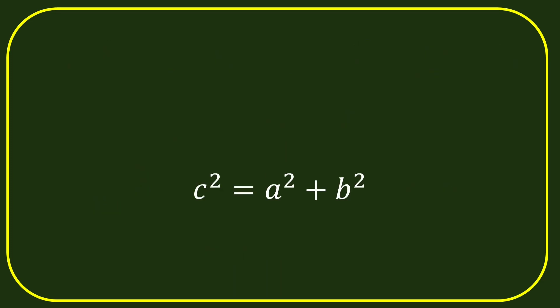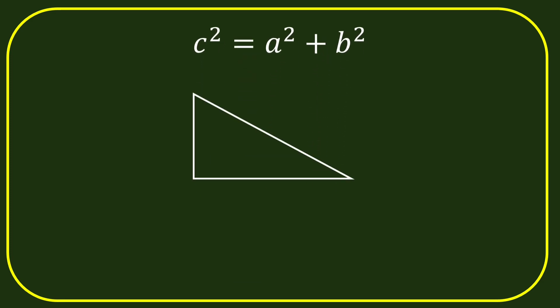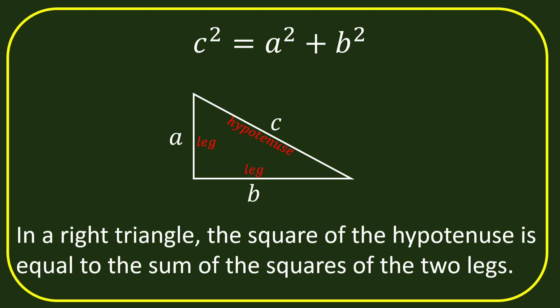It is given by c squared is equal to a squared plus b squared. This formula was introduced by the mathematician Pythagoras. According to him, in a right triangle, the square of the hypotenuse is equal to the sum of the squares of the two legs. In the figure above, the legs of the right triangle are a and b, while the hypotenuse is c. So, according to the statement, c squared is equal to a squared plus b squared.